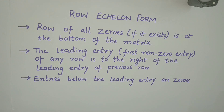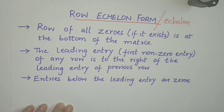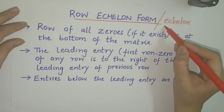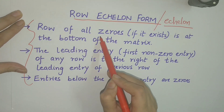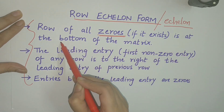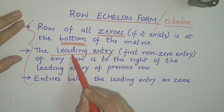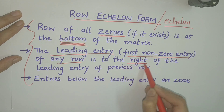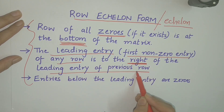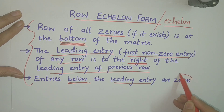Using elementary row operations, a given matrix can be converted to a simpler form which is called the row echelon form or echelon form. A matrix is said to be in echelon form if it satisfies three conditions: first, if there is a row of all zeros then it must be at the bottom of the matrix; second, the leading entry — the first non-zero entry of any row — must be to the right of the leading entry of the previous row; and third, entries below the leading entry must be zero.